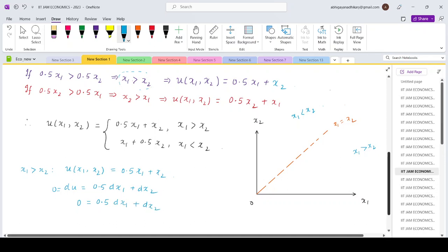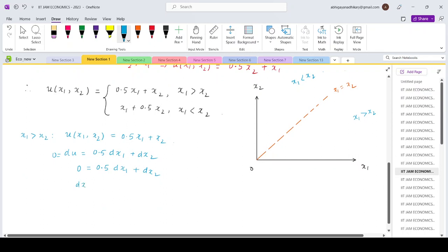So that implies dx₂ equals minus 0.5 dx₁. So dx₂ by dx₁ equals minus 0.5.